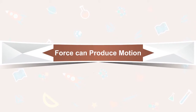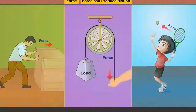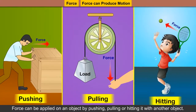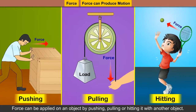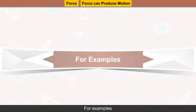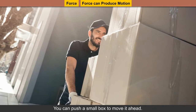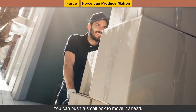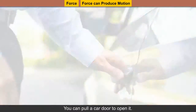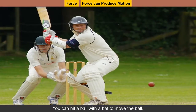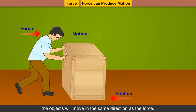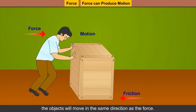Force can produce motion. Force can be applied on an object by pushing, pulling, or hitting it with another object. This applied force can make the object move. For example, you can push a small box to move it ahead, pull a car door to open it, or hit a ball with a bat to move the ball. Objects will move in the same direction as the force.